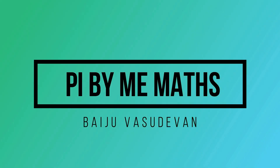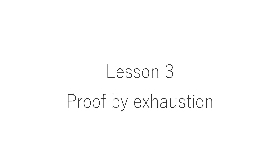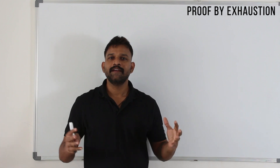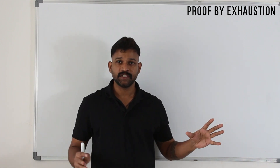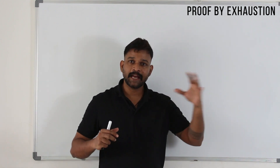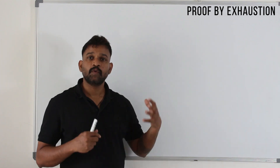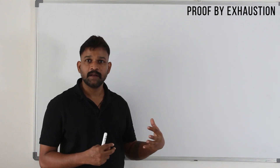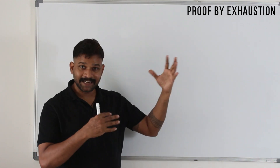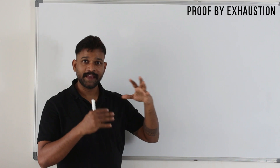Welcome back to my channel Pi by Mimax, by Jeevas Devan. So we have completed proof by deduction. Now type 2 is proof by exhaustion. What we have in our syllabus is just a little area of proof by exhaustion.